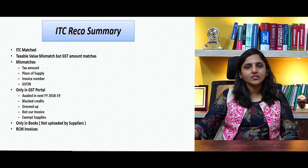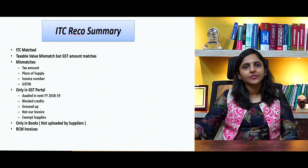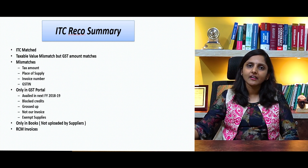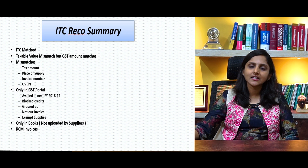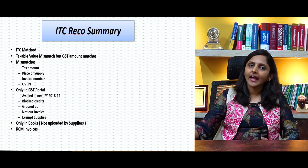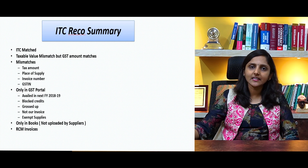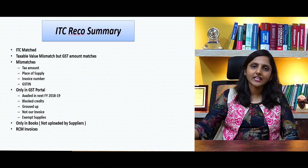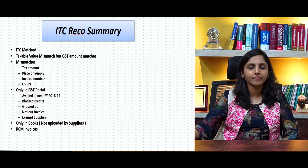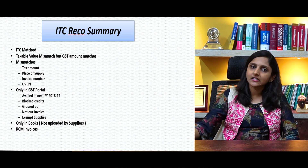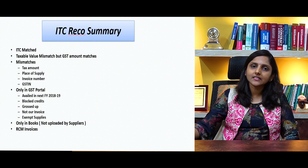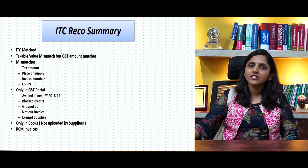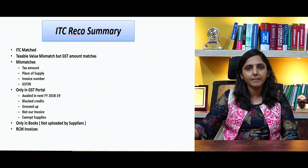Now, the exhaustive reconciliation required with respect to input tax credits. After the reconciliation process, the input tax credits will fall under major buckets. One is invoices which would have matched — matched ITC — and the second would be mismatched ITC, probably falling into aspects like tax amount mismatch, place of supply mismatch, invoice number and date mismatch, or GST number mismatch. In certain cases, taxable value might differ but tax amount might match. In other cases, invoices are reflected in the portal but not in my books.